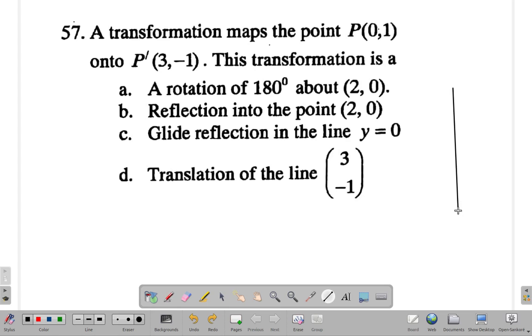Sometimes it helps with this type of question to do a little sketch to see what's going on. P is at (0,1), so this is P located right here. And P' is at (3,-1), so right here it's down at negative 1 and beside 3. This is P'.